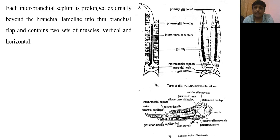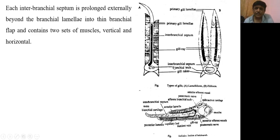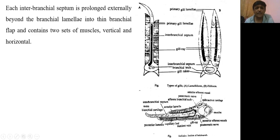Each interbranchial septum is prolonged externally beyond the branchial lamellae into a thin branchial flap. This flap-like structure contains two sets of muscles: ventral and horizontal muscles.